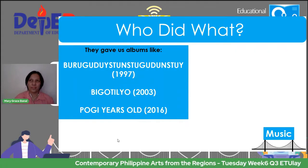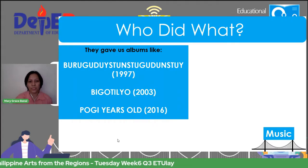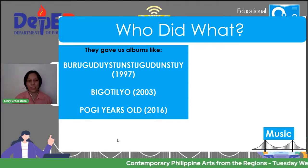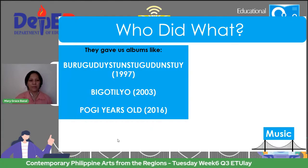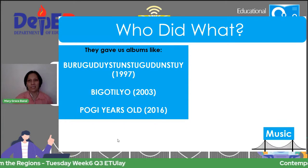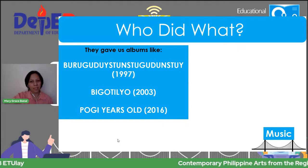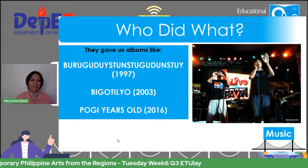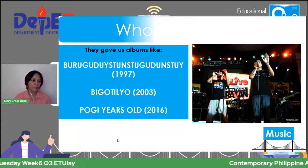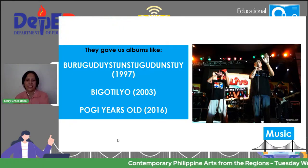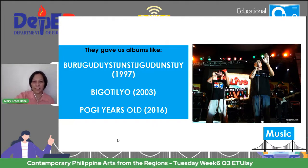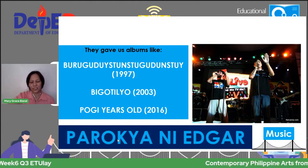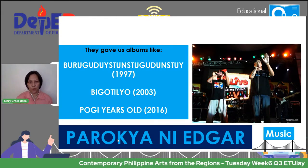This group of artists gave us albums like 'Buruguduystuy' back in 1997 — that's their second album — then 'Bigotilyo' released in 2003, and in 2016 they gave us the album 'Foggy Years Old.' What is the name of this group of artists? For your final clue, there is a picture referring to them. You have 10 seconds to type in your answers. Time is up — this band is called Parokya ni Edgar, an iconic representation of music as a contemporary art form in our country.